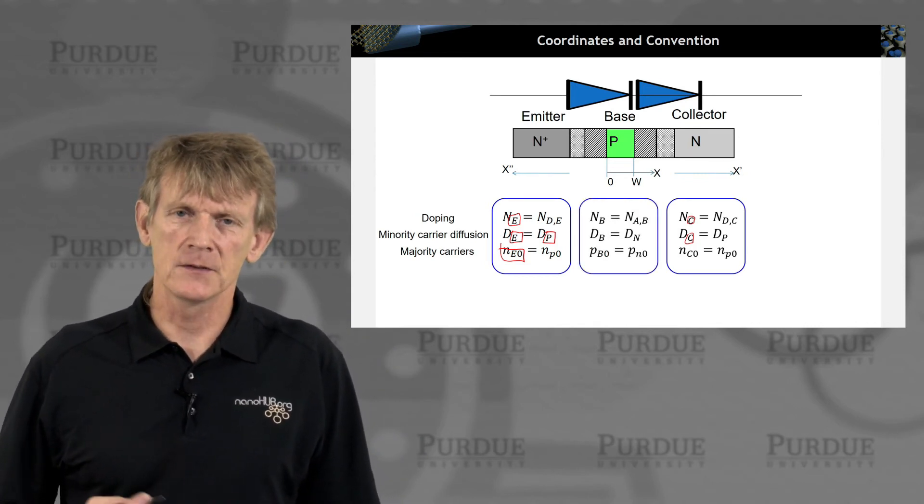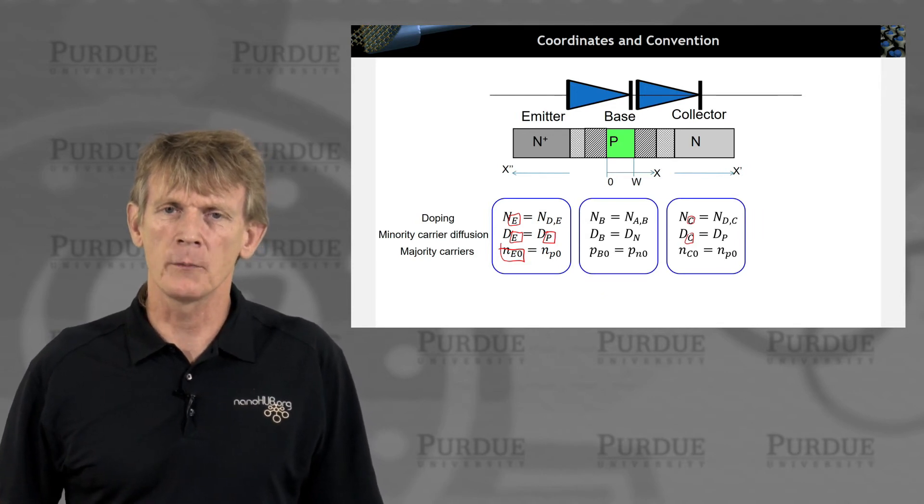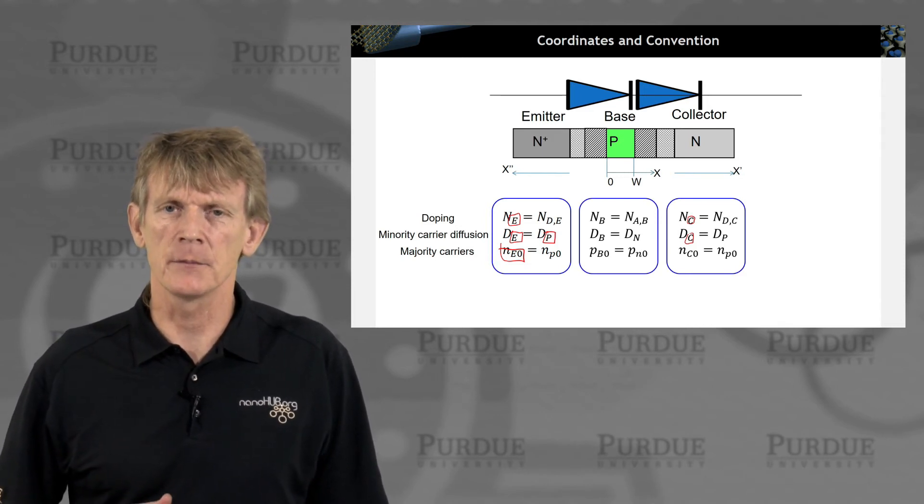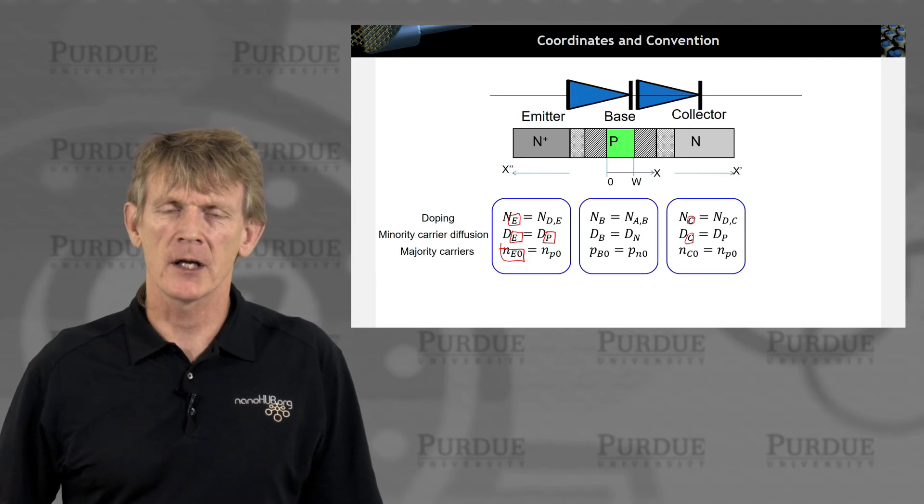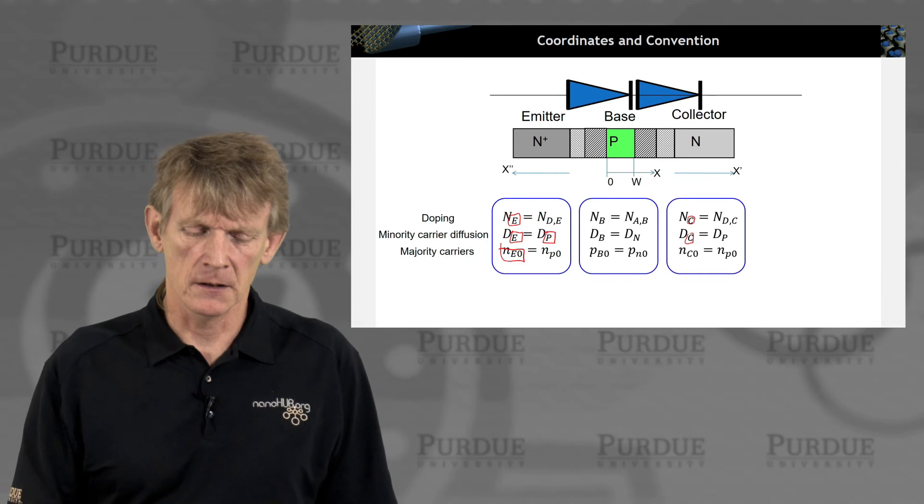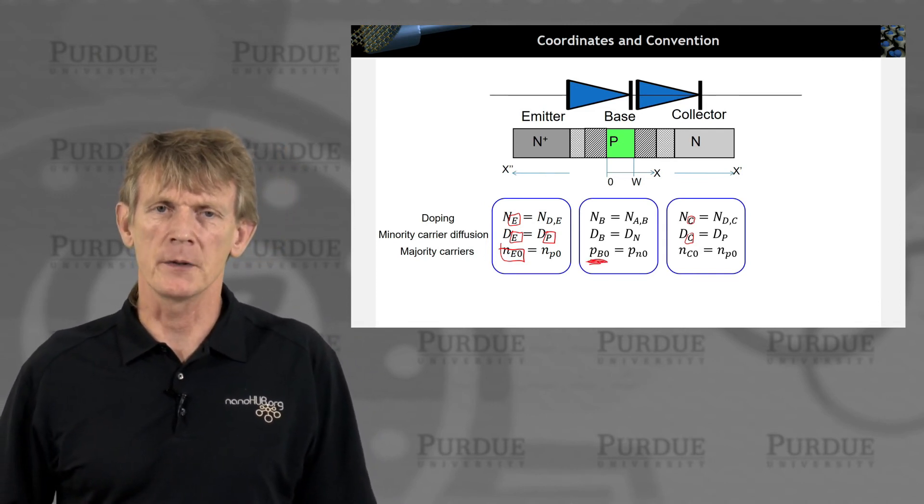And the base is all the same, effectively, but for acceptor doping, we have an electron diffusion coefficient now, because in the base, the electrons are the minority carriers. And we have equilibrium majority carriers, which in the P base are holes. And again, the indices are all just going with B.